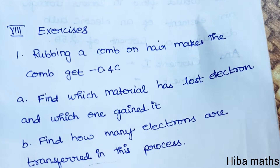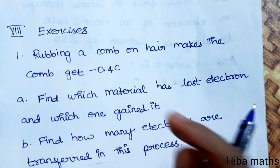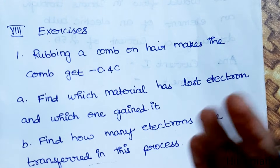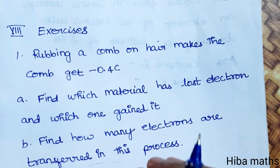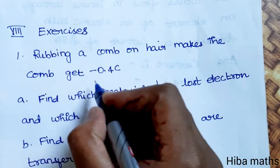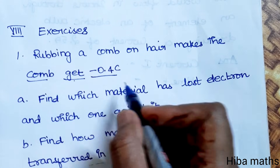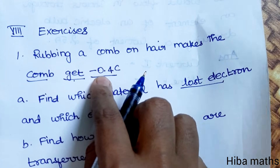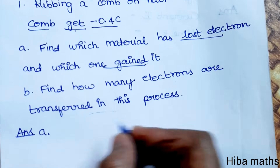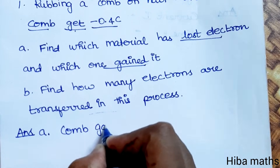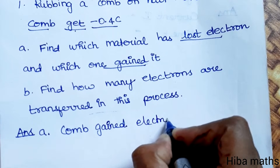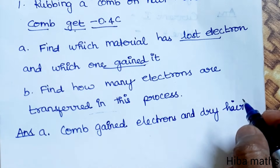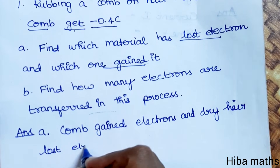When the comb is rubbed on hair, the comb gains electrons and the dry hair loses electrons. So first answer: comb gained electrons and dry hair lost electrons.